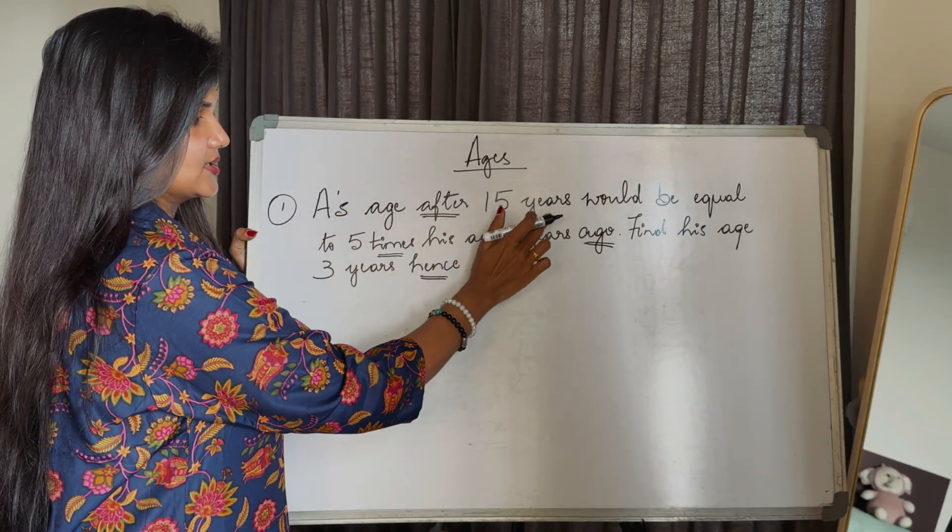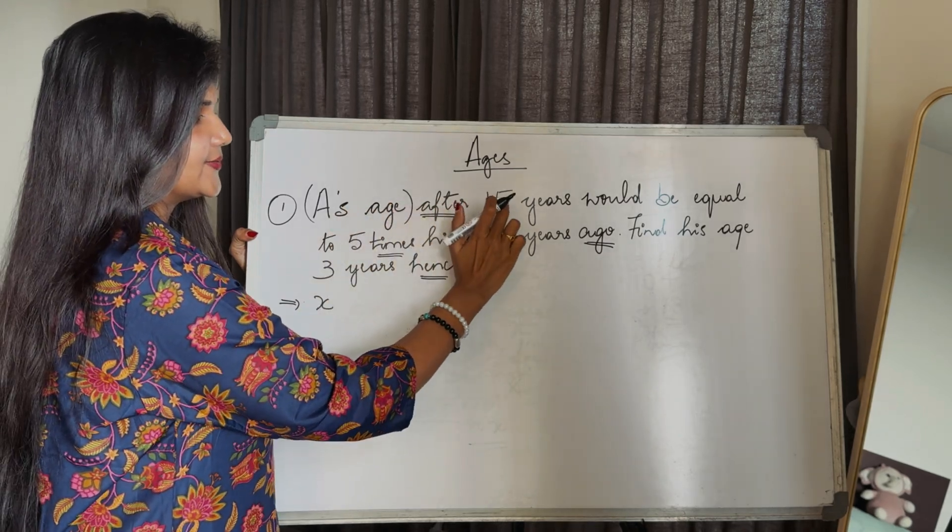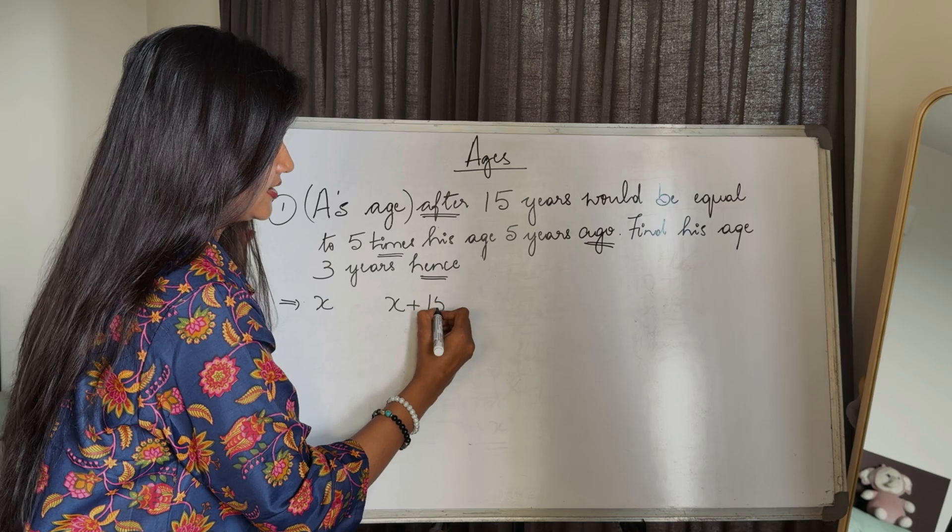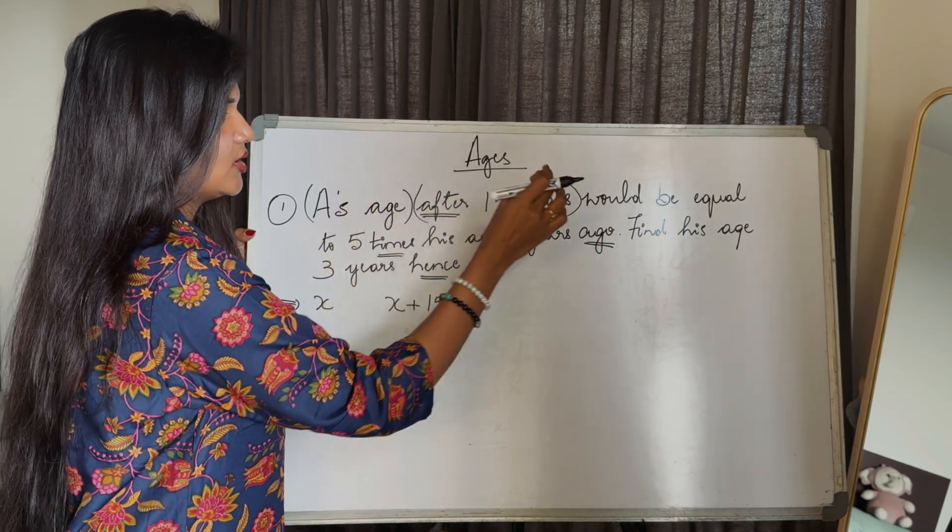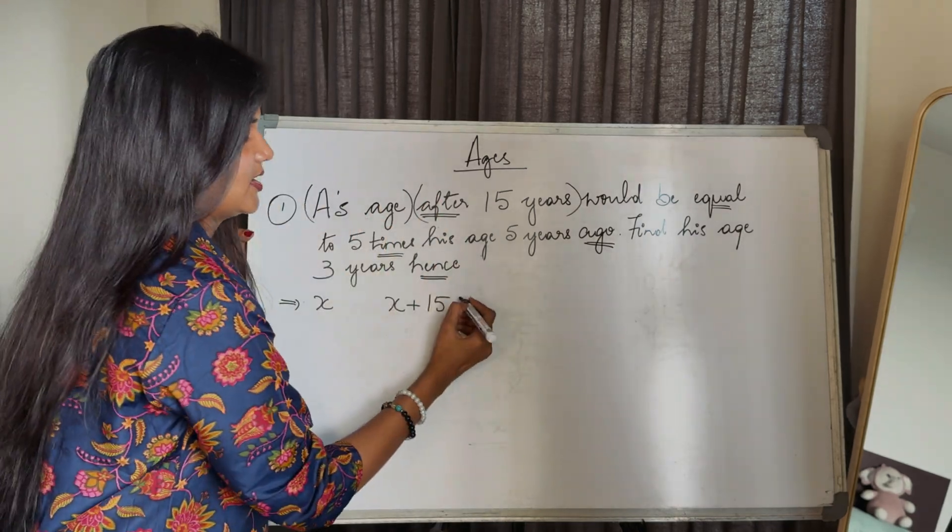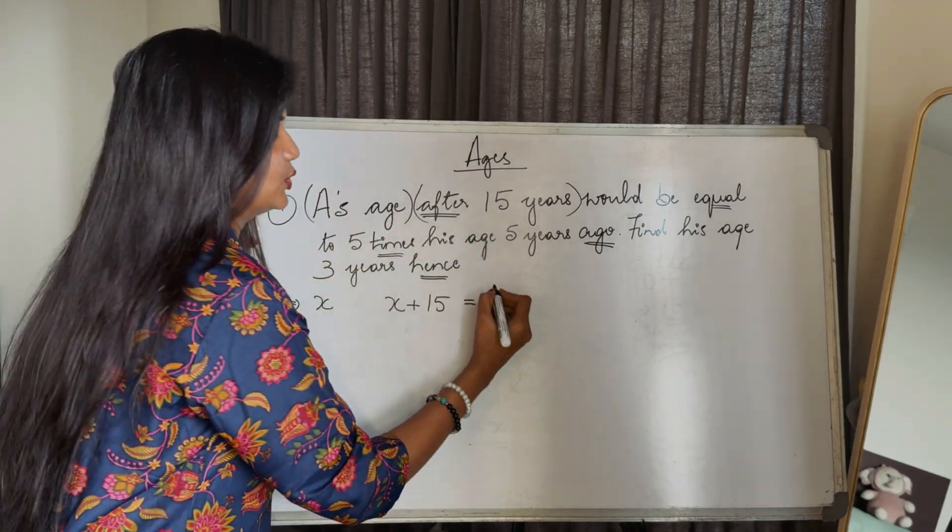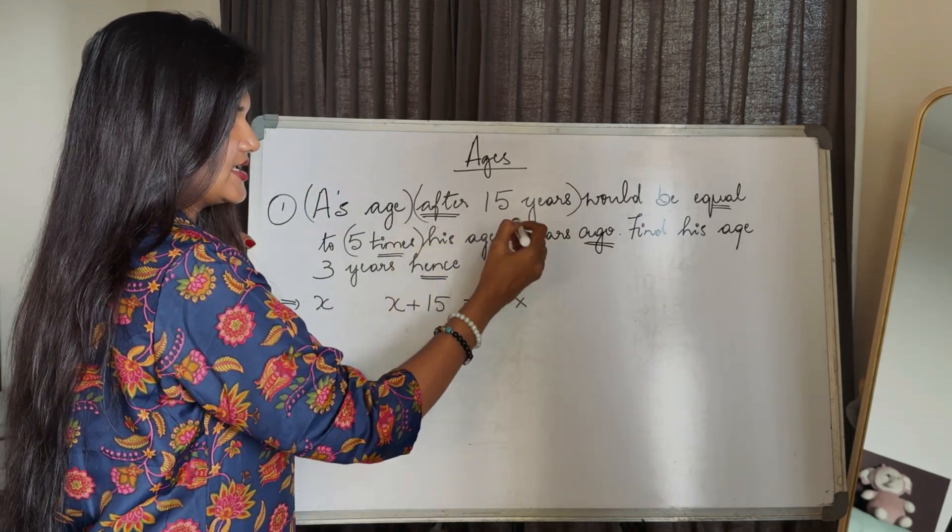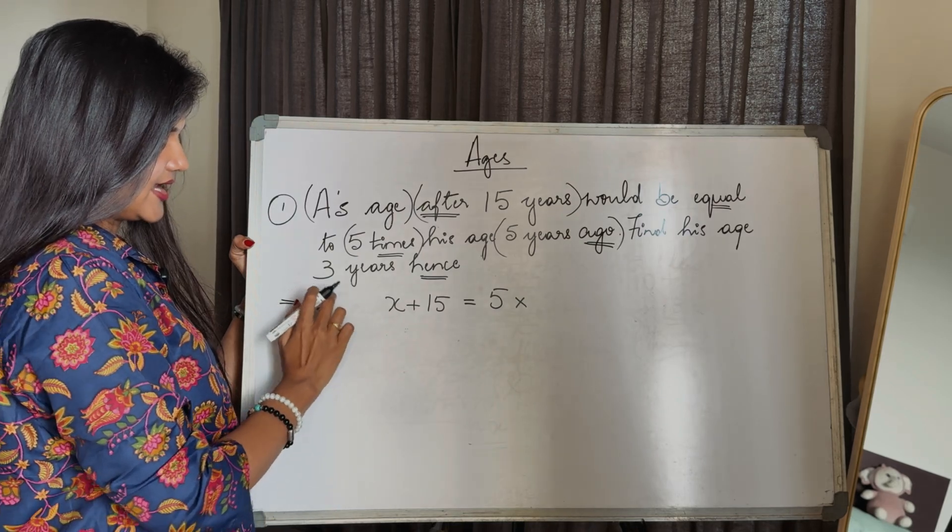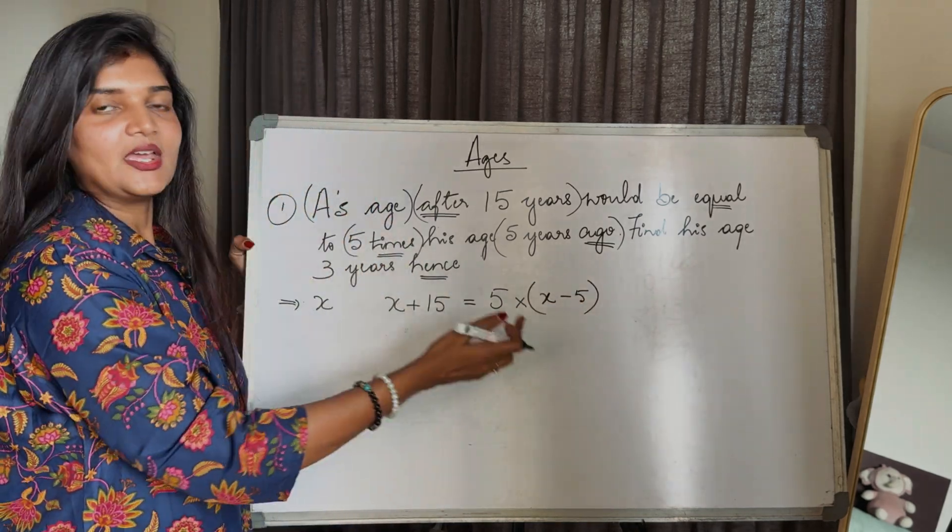A's age after 15 years - let's take A's age as X for now. After means add or plus, so X plus 15. That part is finished. Would be equal to - equal is nothing but the equation. Five times his age five years ago. Five times means multiplication. Five years ago means minus or subtract. So it's X minus 5.